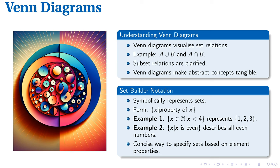From visualization, we transition to symbolic representation of sets using set builder notation. This mathematical expression takes the form {x | property of x}. An example is {x ∈ ℕ | x < 4}, which translates to the set {1, 2, 3}. Another example, {x | x is even}, represents all even numbers. This notation is a concise method to specify sets based on the properties of their elements.